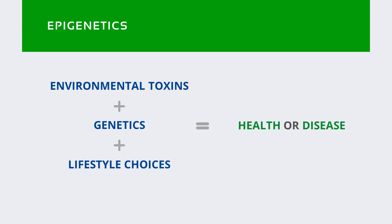DNA methylation is the regulation of the expression of genes as methylation is attached to specific sections of DNA. Gene expression is influenced by methylation patterns as well as diet, nutrition, and environment. This is known as epigenetics. Methylation of DNA plays a crucial part in epigenetics and which genes are turned on and which genes are turned off. For most, but not all genes, less methylation would result in the genes being turned on, and more methylation would result in the genes being turned off.